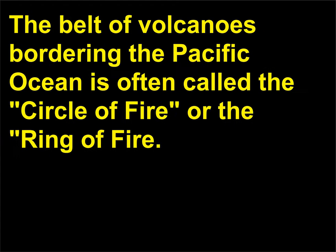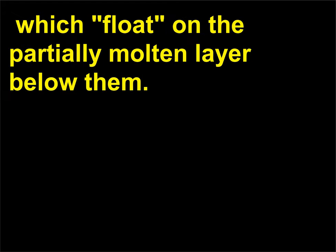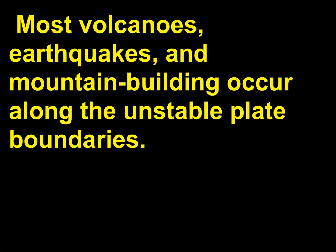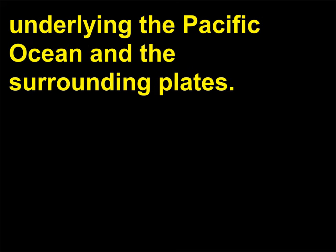Where is the circle of fire? The belt of volcanoes bordering the Pacific Ocean is often called the circle of fire or the ring of fire. Earth's crust is composed of 15 pieces, called plates, which float on the partially molten layer below them. Most volcanoes, earthquakes, and mountain building occur along the unstable plate boundaries. The circle of fire marks the boundary between the plate underlying the Pacific Ocean and the surrounding plates.